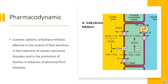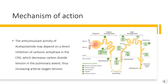Acetazolamide is a potent carbonic anhydrase inhibitor, effective in the control of fluid secretion, in the treatment of certain convulsive disorders, and in the promotion of diuresis in instances of abnormal fluid retention. It is a non-bacteriostatic sulfonamide with a chemical structure and pharmacological activity distinctly different from the bacteriostatic sulfonamides. The anticonvulsant activity may depend on direct inhibition of carbonic anhydrase in the CNS, which decreases carbon dioxide tension in the pulmonary alveoli, thus increasing arterial oxygen tension. The diuretic effect depends on inhibition of carbonic anhydrase, causing a reduction in hydrogen ions available for active transport in the renal tubule lumen, leading to alkaline urine and increased excretion of bicarbonate, sodium, potassium, and water.